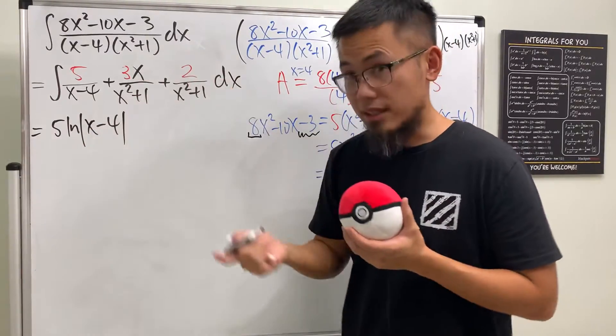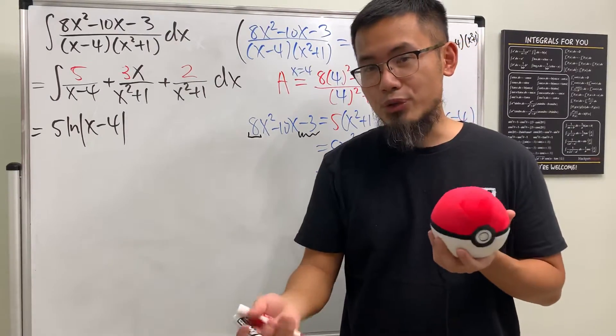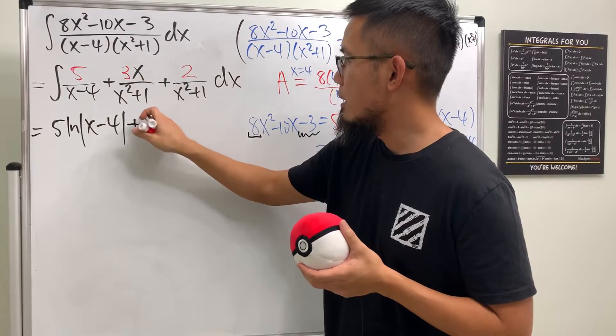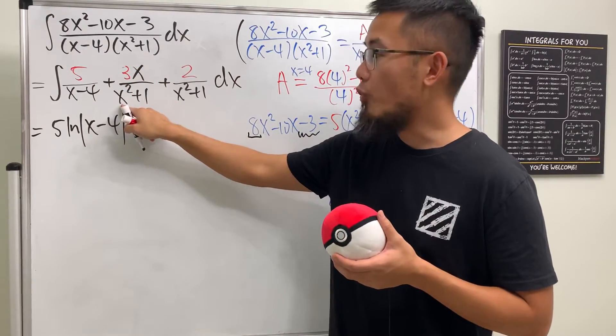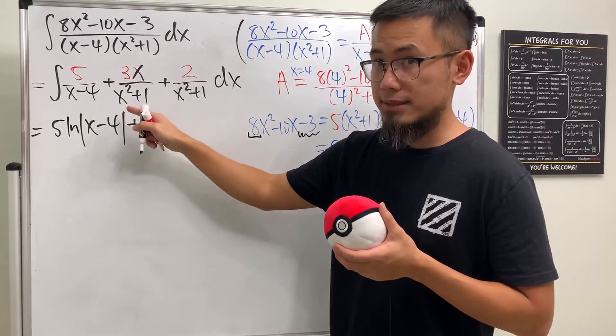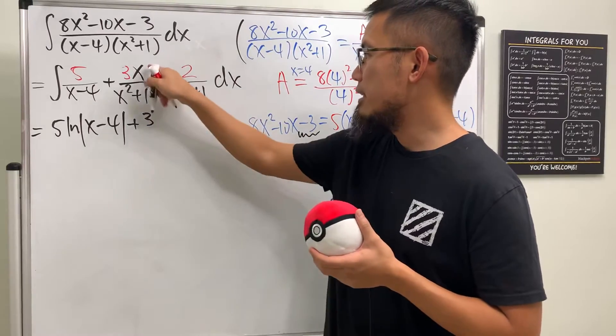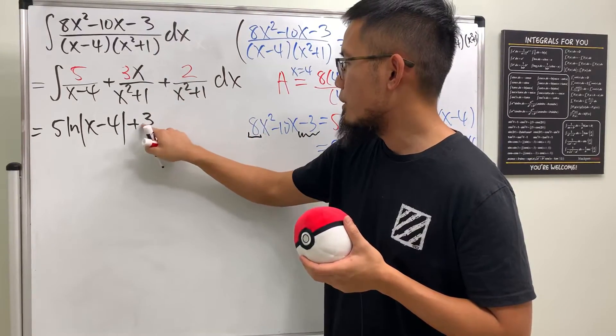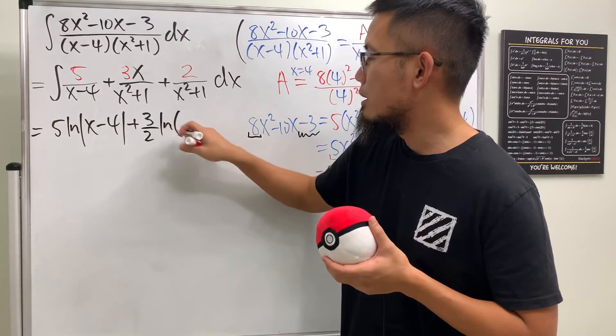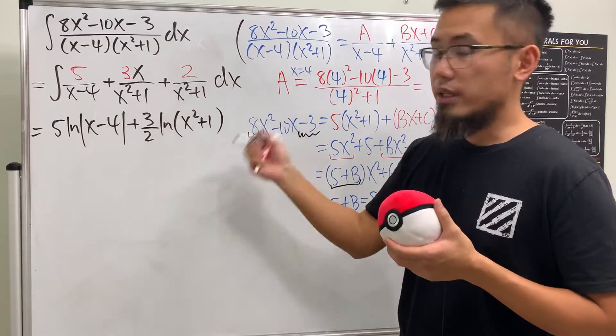Next you have the x on the top. This you can do a u-sub. All in all though we'll end up with +3, but then you will get a over 2, because the derivative of x² + 1 is 2x, so when you divide you will have that 2 factor on the bottom and the x will cancel each other. It will be 3/2 and then it's a natural log situation, and since x² + 1 is always positive I'm just going to write down ln(x² + 1).